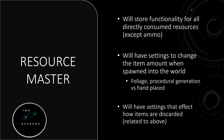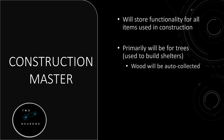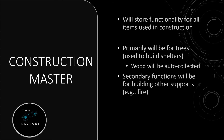We'll have all of these in our resource master; implementation of these and other nuances will occur within the subclasses. First, we have the construction master. The construction master will store the functionality for items used in construction — for example, wood. This will primarily be used for building shelters via trees. Wood is kind of both auto-collected and manually harvested, but we'll talk about that more when we get to section 6. In section 4, when we do this, it will be purely manual harvesting. There will be secondary functions built in for other supports: building fires, building traps if we include traps. We will mostly set the construction master up in section 4, and the utility of the items we're picking up we'll do in section 6.